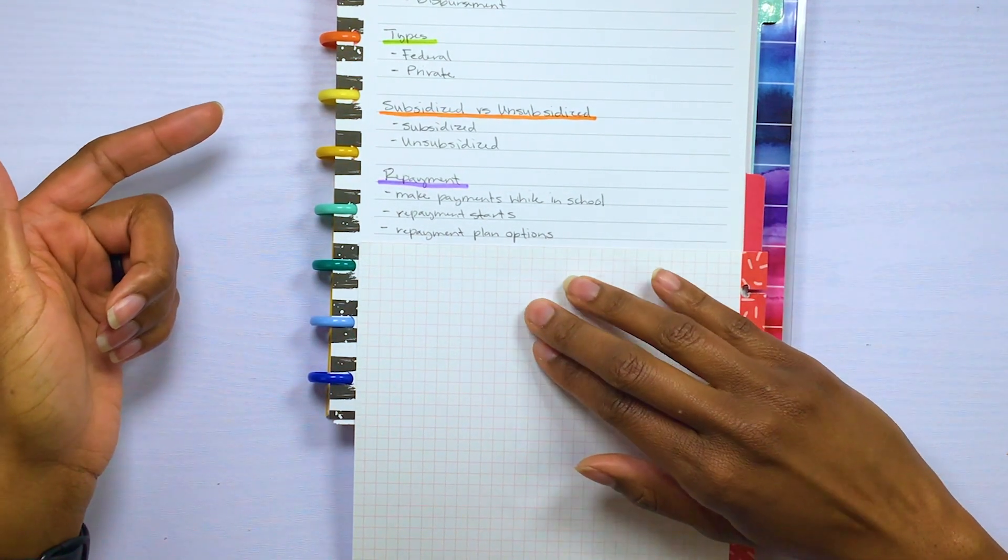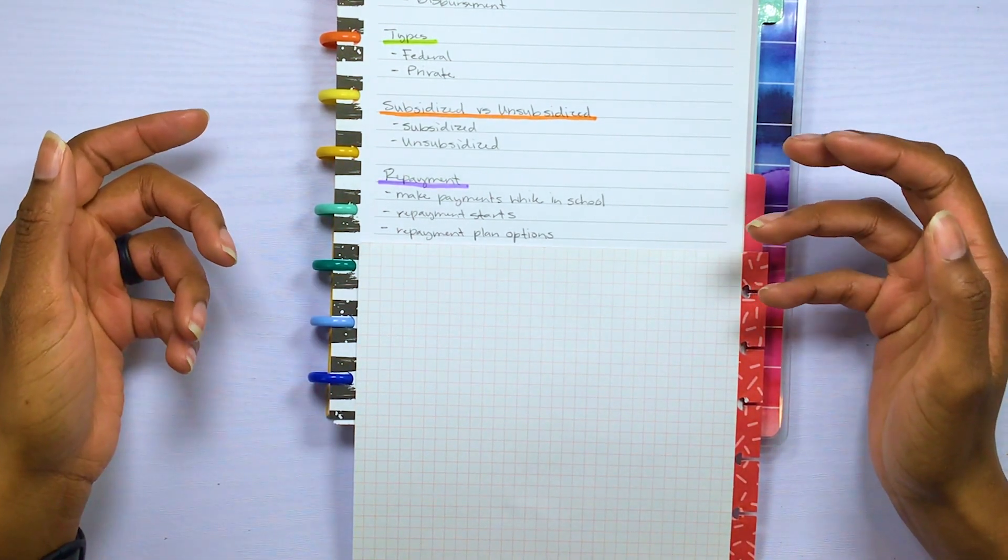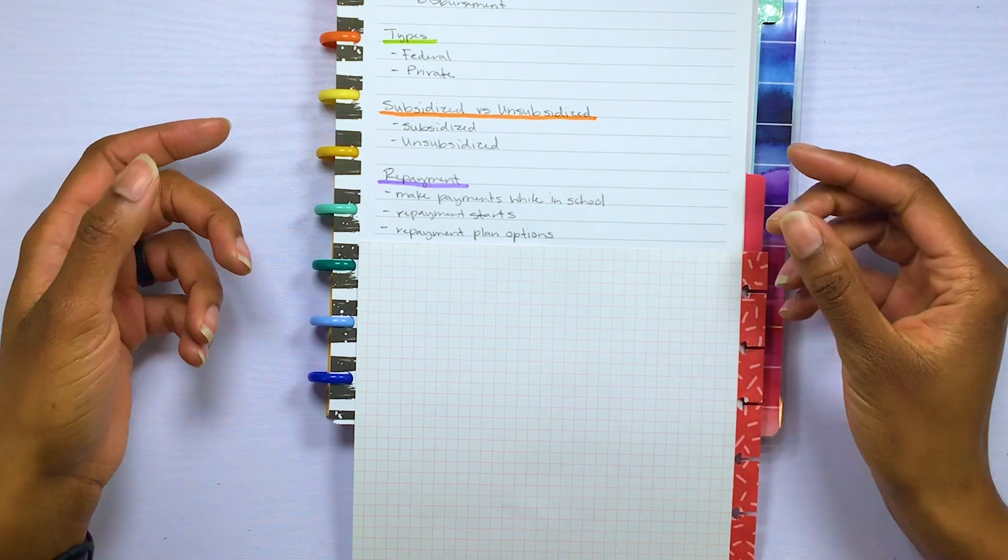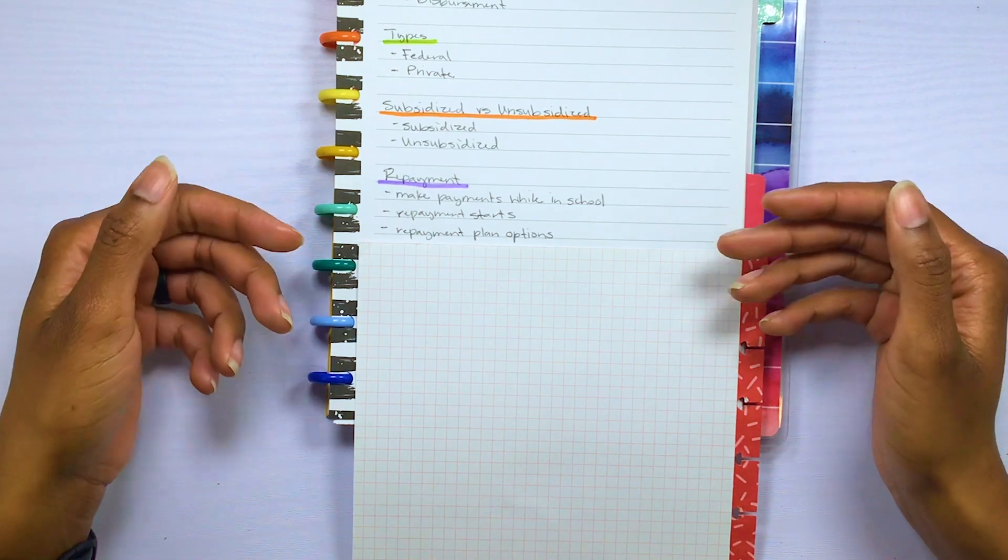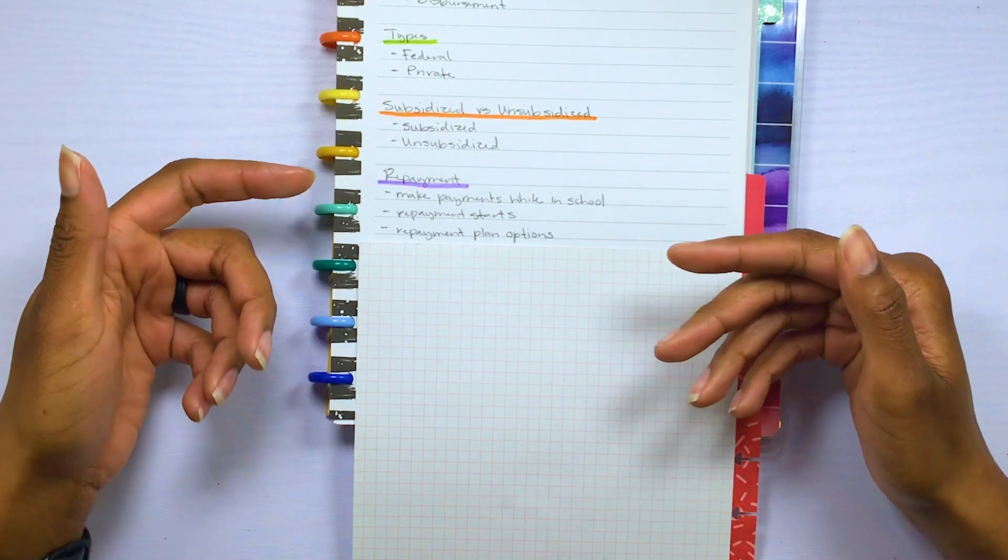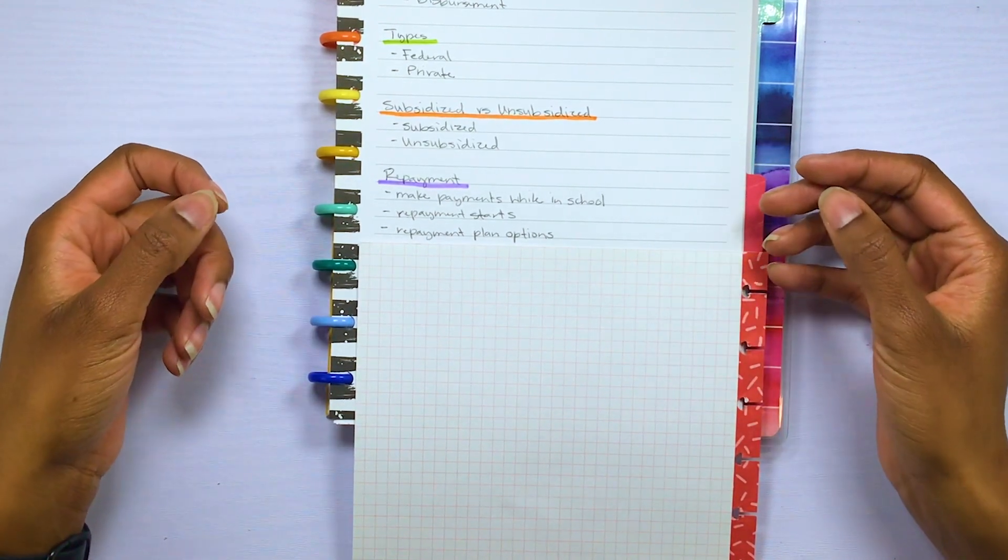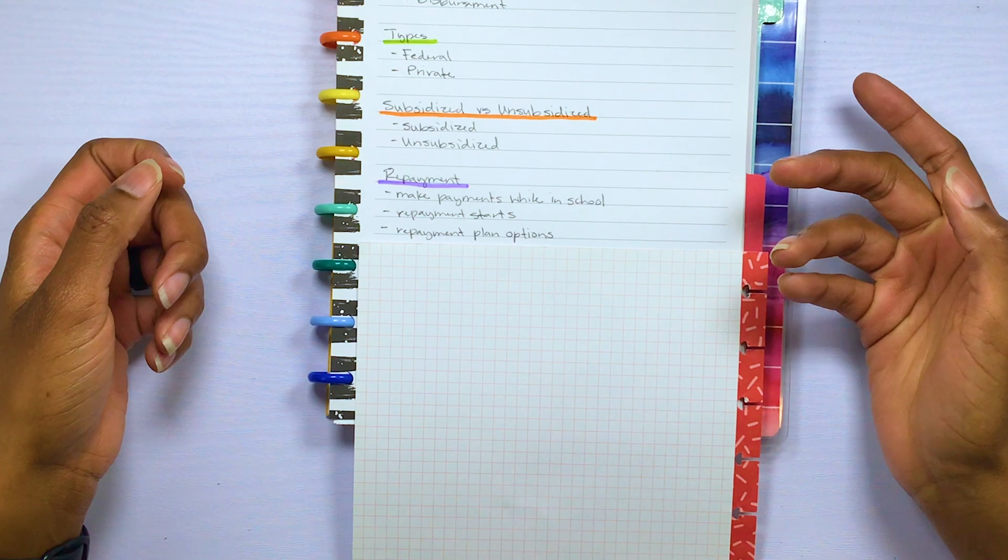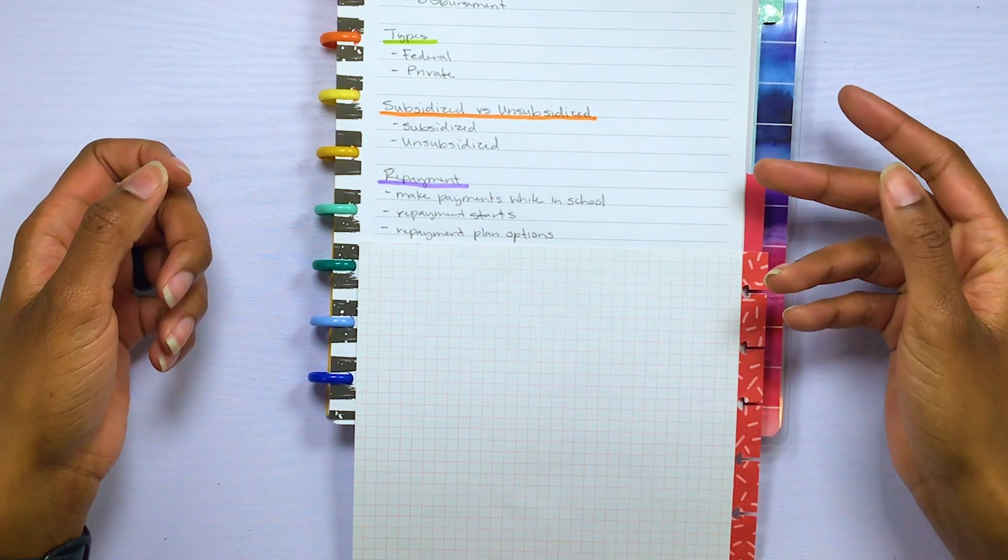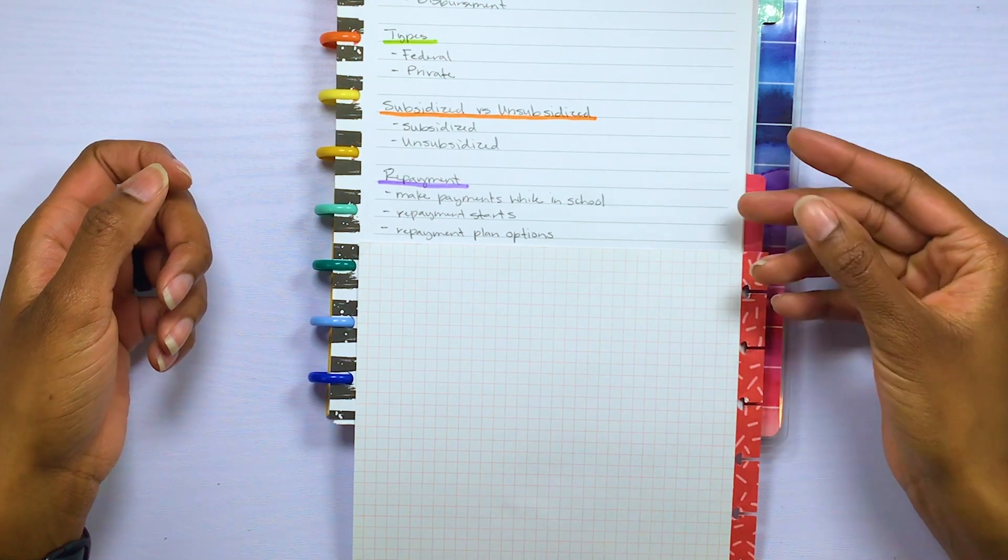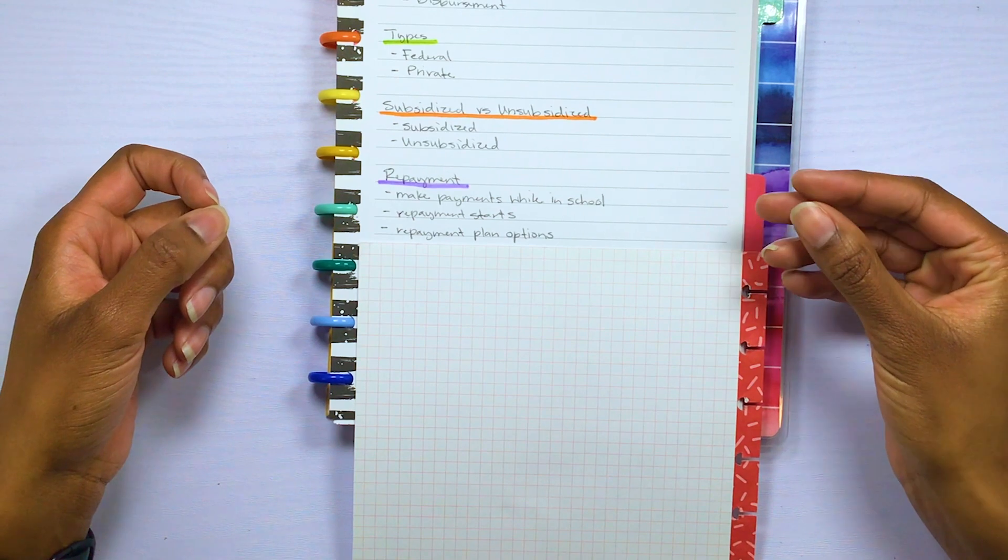So with repayment, there are several repayment plan options and I'm only going to go over a couple. So the first one is going to be your standard repayment, and this is basically the default repayment plan. Like once you graduate and your loans go into repayment status, but you can request a different repayment plan at any time.